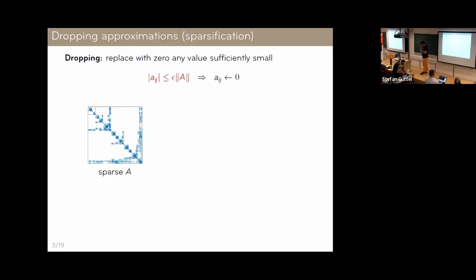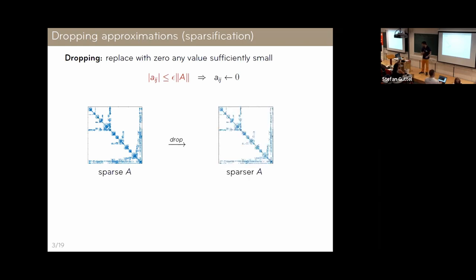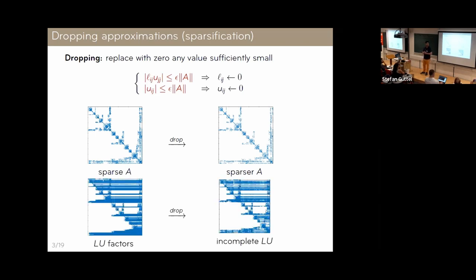I'm mainly going to focus on two types of approximations. The first is dropping — basically just replacing with zero any sufficiently small value. If we have a sparse matrix, we can set a threshold epsilon and drop any coefficient smaller than it, making the matrix sparser. More commonly, we look at the LU factors and apply a similar strategy to make those sparser — that's what we call an incomplete LU factorization.